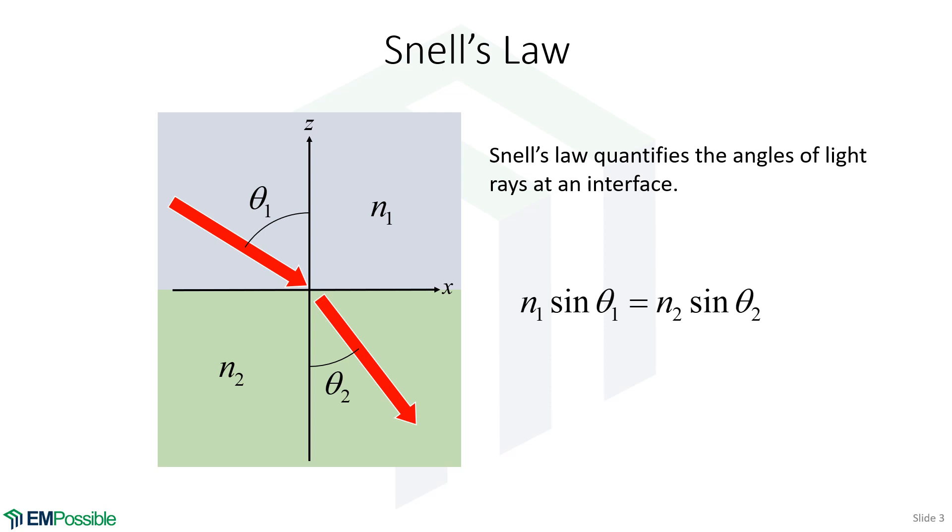The only exception: if we have a wave that hits this interface exactly at normal incidence, it will exit exactly at normal incidence. But as long as there's any angle involved, the angle will change. Notice the angle on one side is always smaller than the angle on the other side.